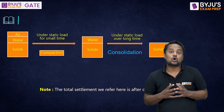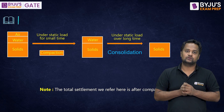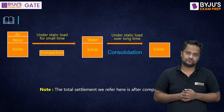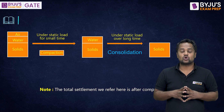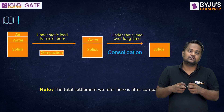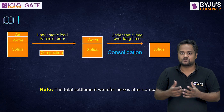But before that, let me tell you the difference between compaction and consolidation. Compaction is reduction of volume due to reduction in air voids, and consolidation is reduction in volume of soil due to reduction of the pore water pressure — to be very precise, excess pore water pressure.